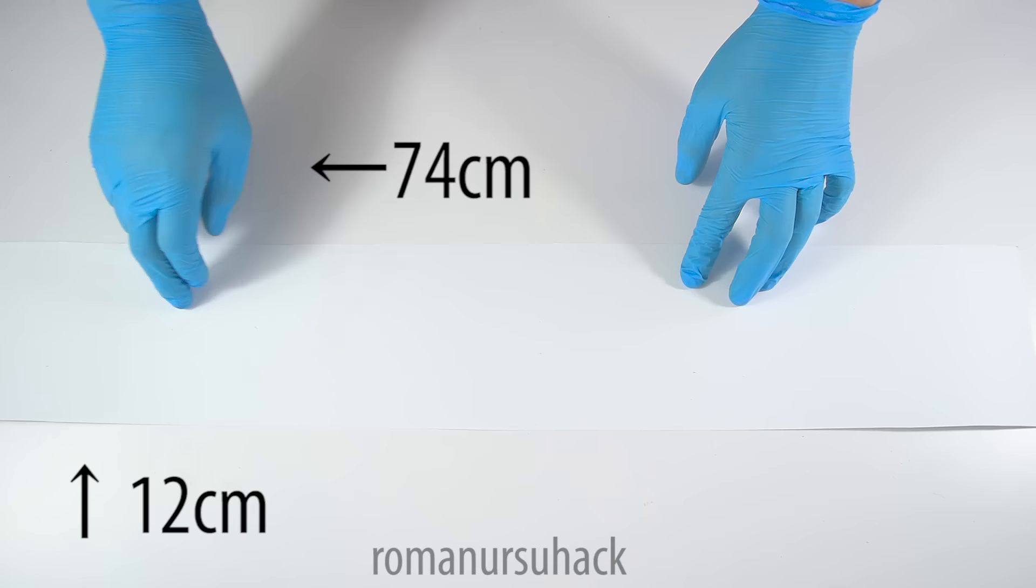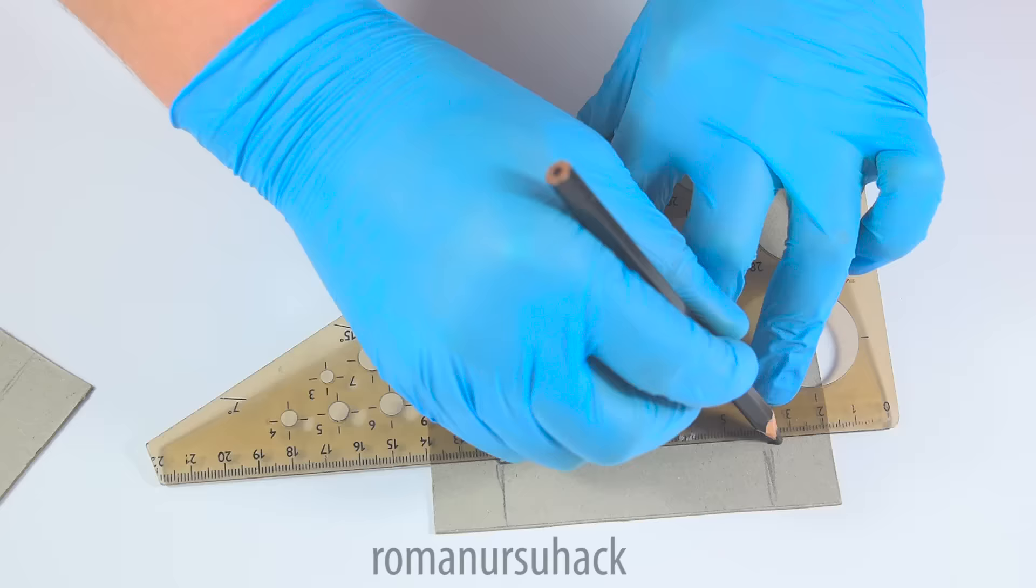Now, to form the cylinders we will need 3 strips of paper: 12x74, 12x82 and 15x86 cm. What and where we will use will be clear during the assembly.